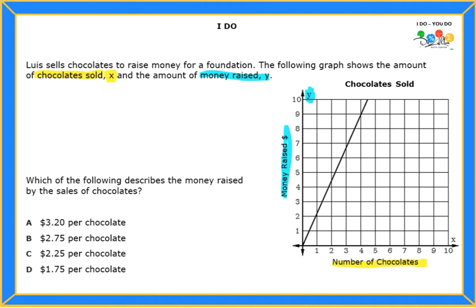Okay, so be careful with that. Now, the question is asking me to find what describes the money raised by the chocolate. The answer choices are talking about per chocolate. So what does it mean by per chocolate? Anytime that you see the word per or each, it means one.